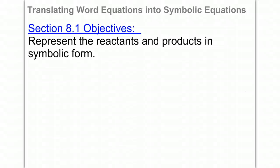Chapter 8 is chemical reactions and we'll start with section 8.1, which is translating word equations into symbolic equations. We'll represent reactants and products in symbolic form. So what are reactants and products?